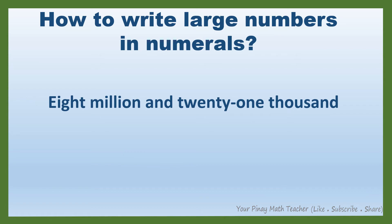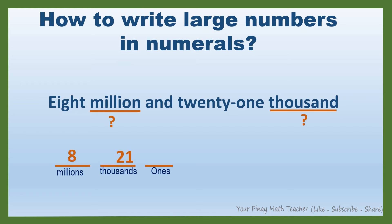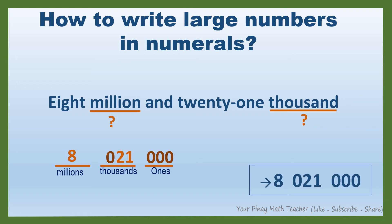Next example: 8,021,000. In this number, the highest period is the millions period, which implies that we have three groups of digits, or three periods. How many millions are there? There are eight. And there are 21 thousands, and none for ones. It follows that we need to add zero before 21, and put three zeros in the ones period. So, this is the numeral for 8,021,000.